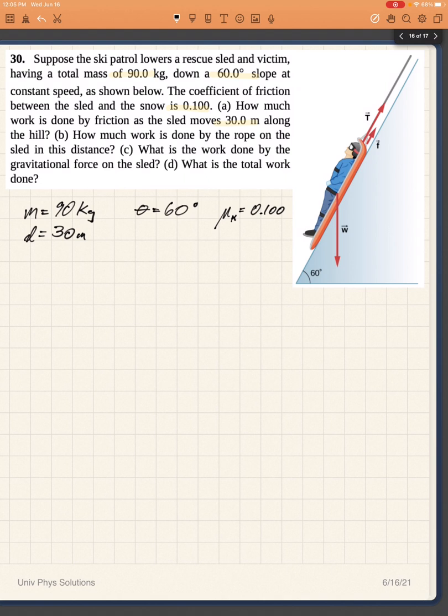Well, our energy is a combination of the kinetic energy, the potential energy and the work done. For Part A you are asked to find the work done by friction as the sled moves 30 meters along the hill. So the work due to friction would be equal to the force that is parallel to the displacement times the displacement.